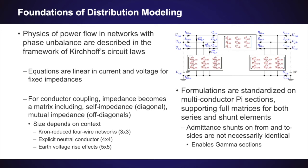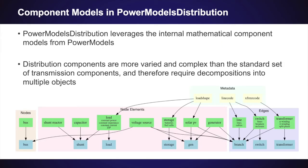In Power Models Distribution, the branch model formulations are standardized on multi-conductor pi sections, which support full matrices for both series and shunt elements, and even allow admittance shunts on the from and to sides to be different, which enables gamma sections. In terms of data models for different components, Power Models Distribution leverages the internal mathematical models of Power Models for consistency, but distribution components are much more varied and complex than the standard set of transmission components, and therefore in many cases, distribution components need to be decomposed into a series of more simple mathematical objects. Here's an example of a flowchart that we use to decompose commonly seen distribution components shown in green into mathematical data objects shown in blue.